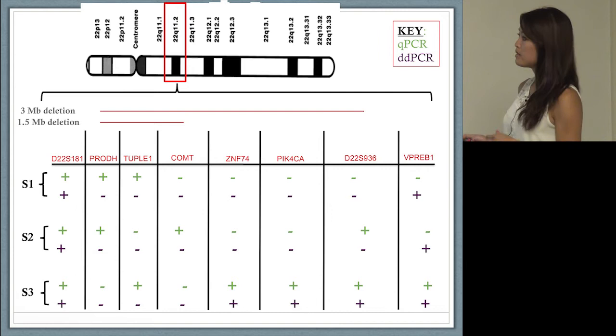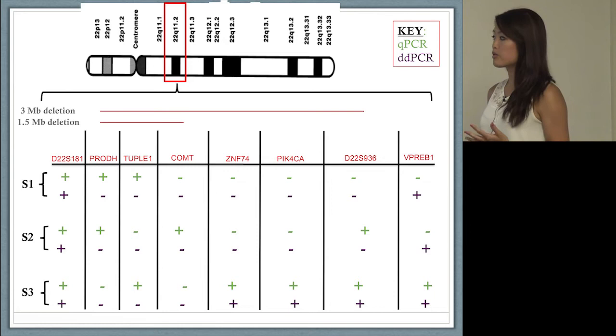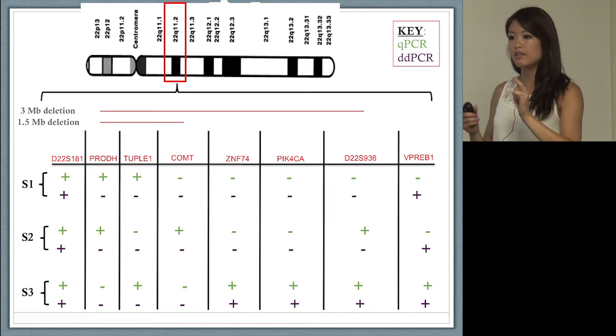For sample two, it looks like this individual has interstitial deletions throughout the 22Q region, which I know is very ambiguous, because individuals with 22Q tend to not have interstitial deletions. They tend to have a contiguous region that's deleted.